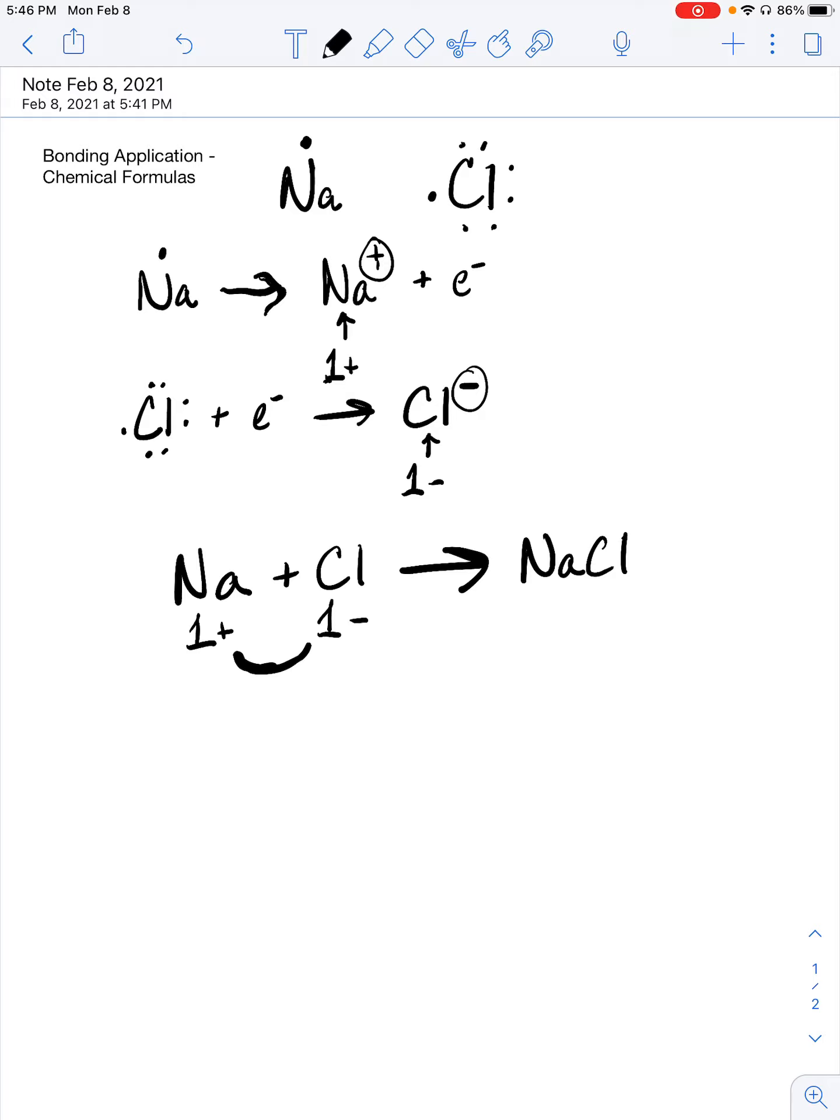We compare that to magnesium chloride. Magnesium is an alkaline earth metal, so it has two valence electrons, so it would be a two-plus in its preferred oxidation state. Chlorine is still the one-minus, and this is not an even match.